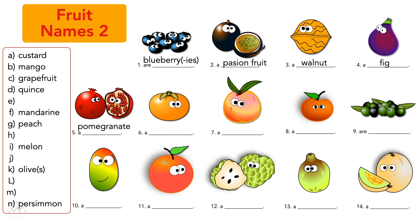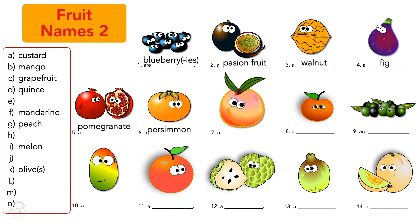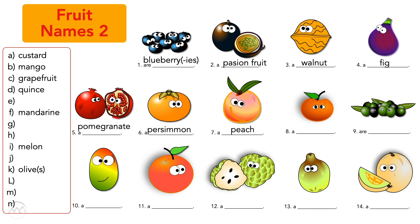Number six — This is a persimmon. This is a persimmon. Number seven — This is a peach. Good! This is a peach.